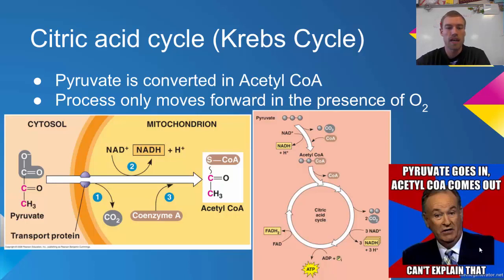We went from a three carbon molecule down to a two carbon molecule, and that is then going to enter into the citric acid cycle, also known as the Krebs cycle. This process only moves forward in the presence of oxygen.